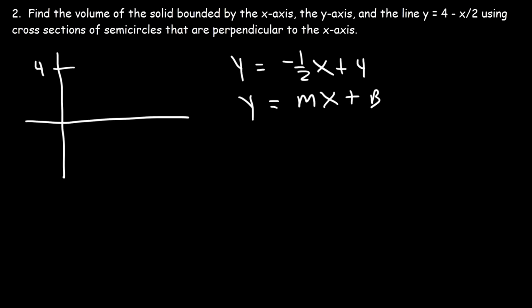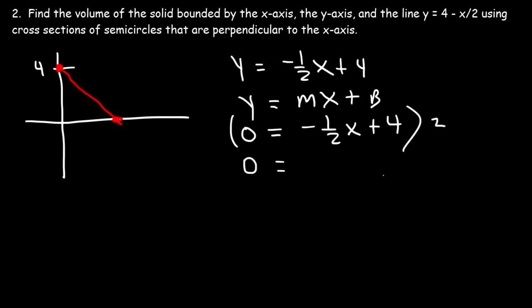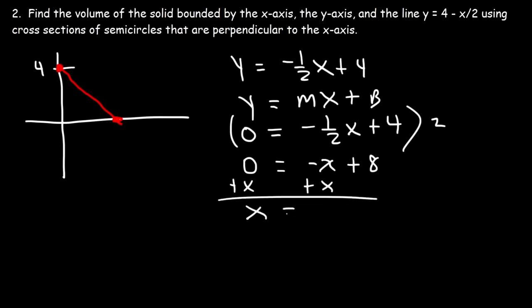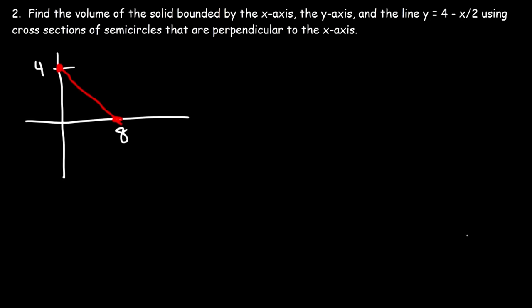We can plot the y-intercept at (0, 4). To find the x-intercept, replace y with 0 and solve: multiplying both sides by 2 gives negative x plus 8, so x equals 8. The x-intercept is 8 and the y-intercept is 4. Since the cross sections are perpendicular to the x-axis, s is parallel to the y-axis.